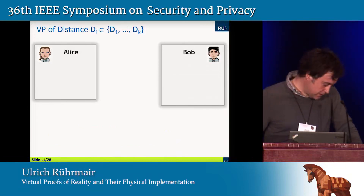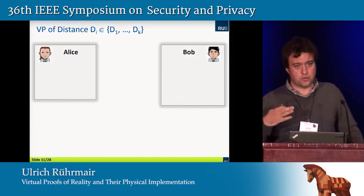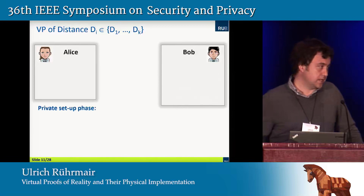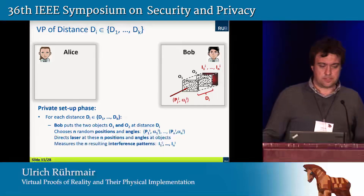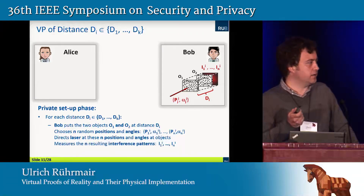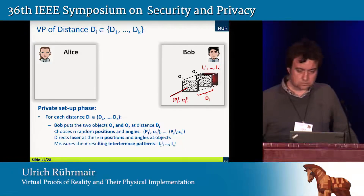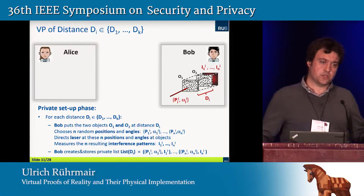Let me explain how this virtual proof of distance actually works. We discretize the distance levels. In a private setup phase, Bob does the following: for each discretized distance level D, he places the two objects at that distance, chooses N random positions and angles, directs the laser beam at these N positions and angles at the first object, and measures and stores the N resulting interference patterns. He creates and stores a private list for that particular distance D_i, consisting of N entries, each containing the laser position, angle of incidence, and the resulting interference pattern — essentially a fingerprint of the behavior of the two objects at distance D_i.